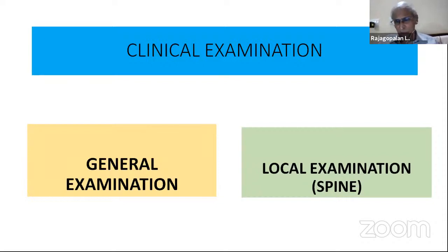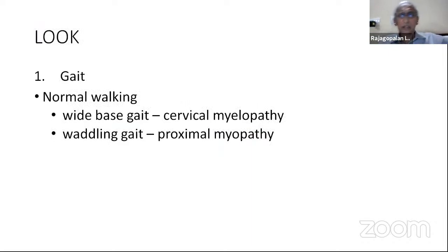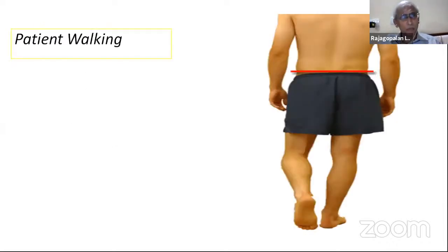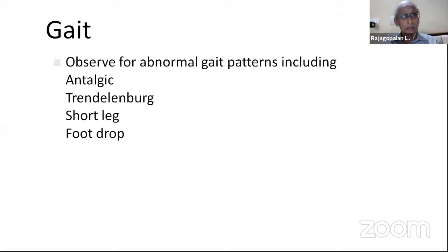Examination starts with gait — not only in hip joint cases. Even a foot drop patient's gait is important. A cervical myelopathy patient walks with a wide-based gait; a patient with proximal myopathy will have a waddling gait; you can also have a Trendelenburg gait. You have to examine the gait and see the patient walking. This is not just for one reason — there are many gait patterns including antalgic gait, Trendelenburg gait, short leg gait, or foot drop from a root problem or peripheral nerve problem.